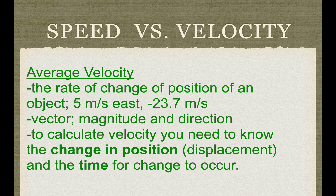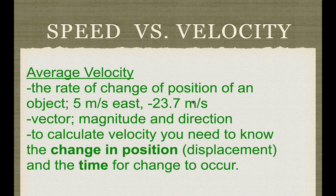Average velocity is the rate of change of position of an object. For example, five meters per second to the east. Velocity is a vector quantity, which means you have to include the magnitude and the direction. People often use north, south, east, west, up, down, left, right — but in math, we usually use negative and positive. For example, an average velocity of minus 23.7 meters per second means the object is changing its position 23.7 meters every second in the negative direction. Negative does not mean the object is slowing down — it just means it's going in the negative direction.